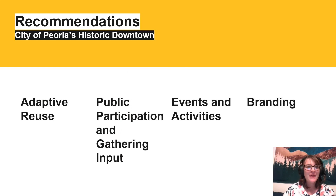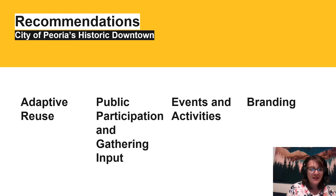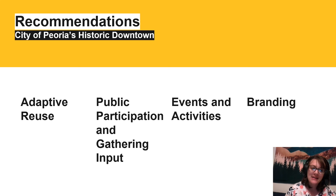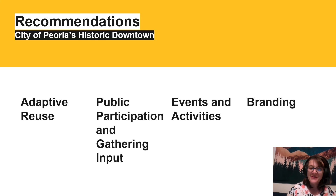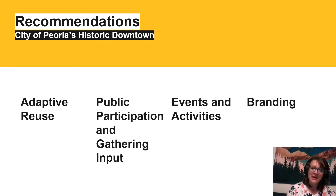Now that we've heard about several case studies, it's time for our recommendations for Peoria. There are four key areas that we think Peoria needs to consider as they look to revitalize their downtown area: adaptive reuse of historic buildings, encouraging public participation and being conscientious of how they gather public input, focusing on events and activities that bring the community together, and also being aware of branding efforts.